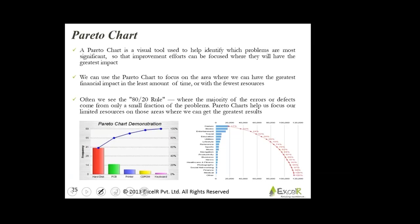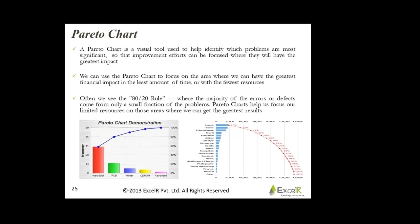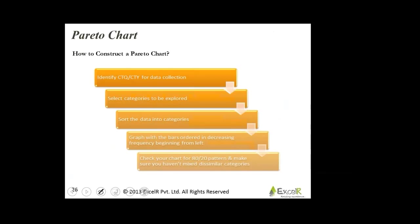How do you construct a Pareto chart? First, identify what is your critical-to-quality or critical-to-output for data collection. Second, select the broad categories to be explored. Third, sort the data into those specific categories. Fourth, graph with bars ordered in decreasing frequency, beginning from the left.